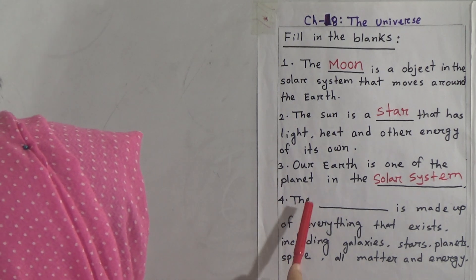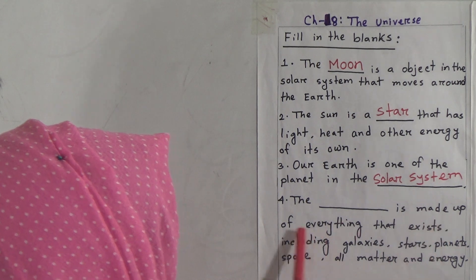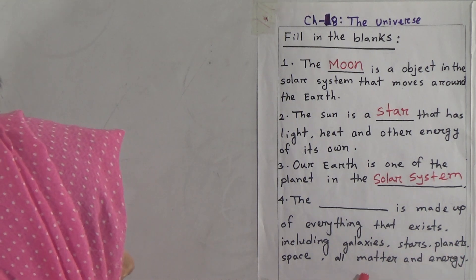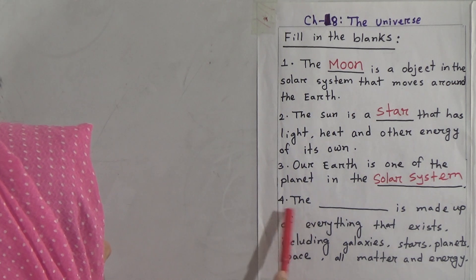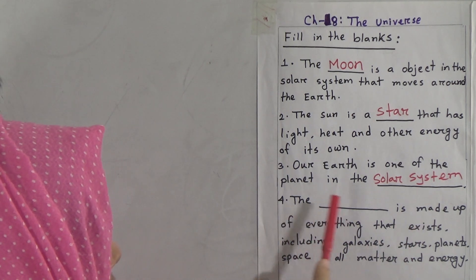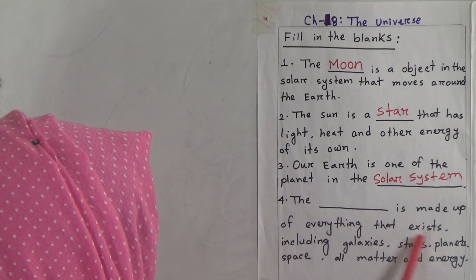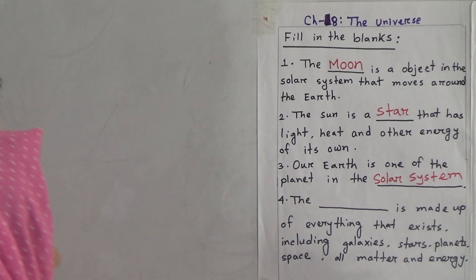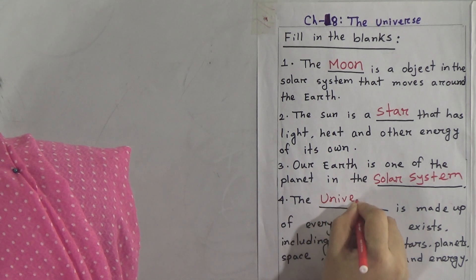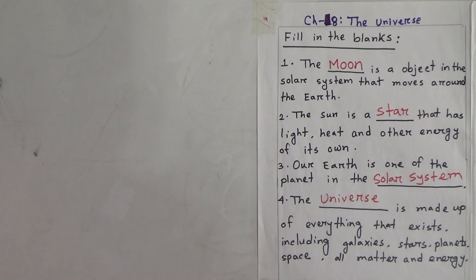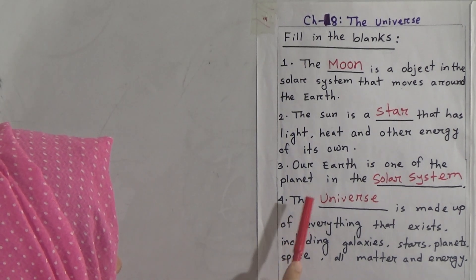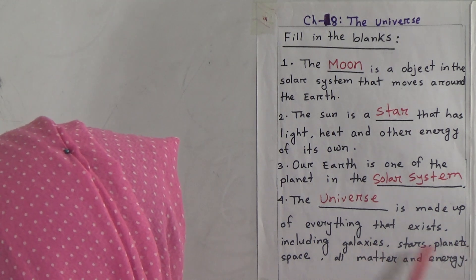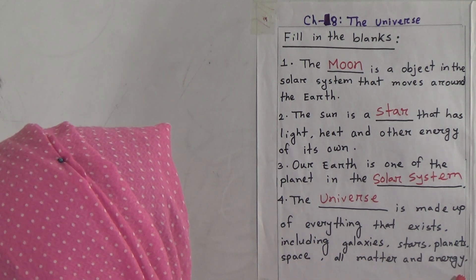Number four: the blank is made up of everything that exists, including galaxies, stars, planets, space, all matter and energy. The answer will be 'the universe'. The universe is made up of everything that exists, including galaxies, stars, planets, space, all matter and energy.